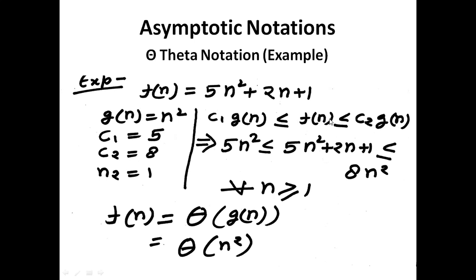Our function f(n) will always lie between c₁·g(n) and c₂·g(n). That means 5n² ≤ 5n² + 2n + 1 ≤ 8n² for all n ≥ 1 (n₀ = 1). Therefore we can write f(n) = Θ(g(n)) = Θ(n²).